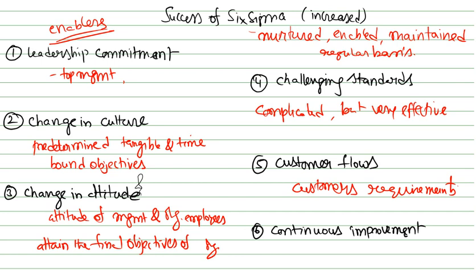Continuous improvement — Six Sigma consolidates regular work where the process is not random but continuous. Each and every aspect is carefully monitored for improvements in customer satisfaction. Improvement must be a continuous process.